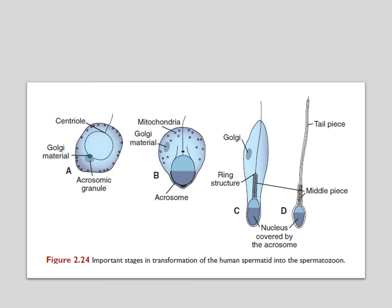The series of changes resulting in the transformation of spermatids into spermatozoa is called spermiogenesis. These changes include: formation of the acrosome, which covers half of the nuclear surface and contains enzymes to assist in penetration of the egg during fertilization; condensation of the nucleus; formation of the neck, middle piece, and tail; and shedding of most of the cytoplasm as residual bodies, which are phagocytosed by Sertoli cells. In humans, the time required for a spermatogonium to develop into a mature spermatozoon is approximately 74 days, and approximately 300 million sperm cells are produced daily.